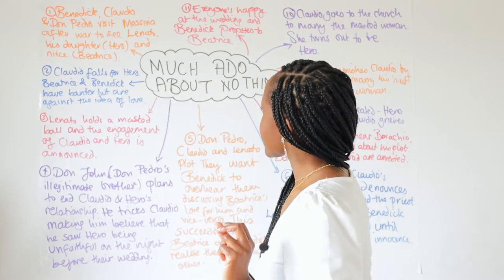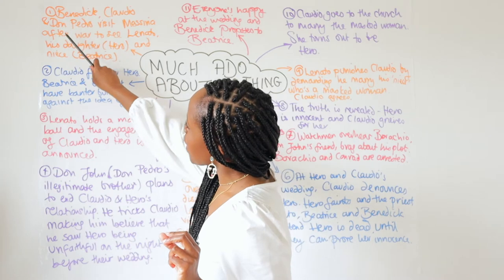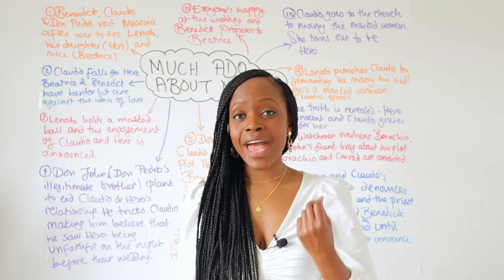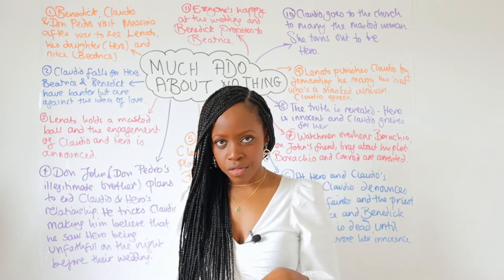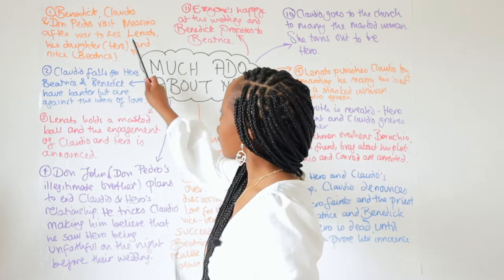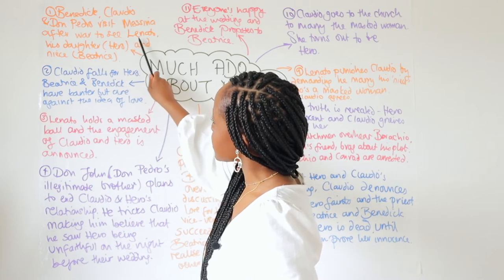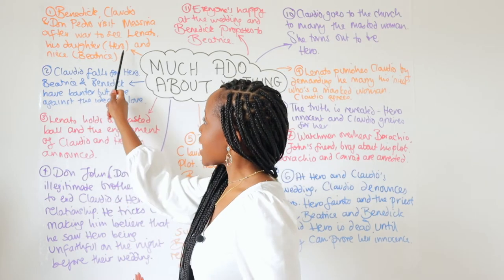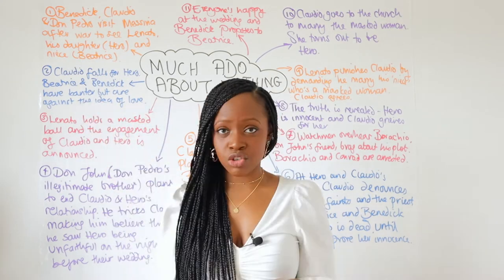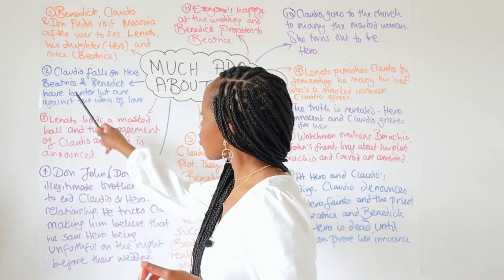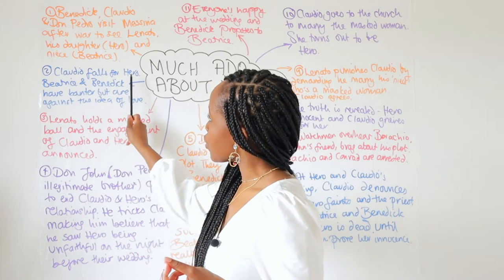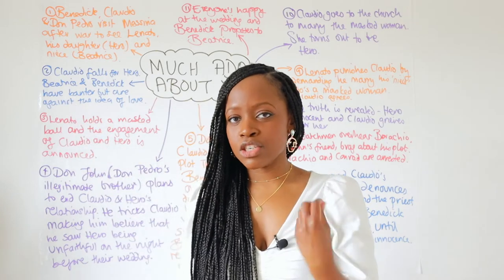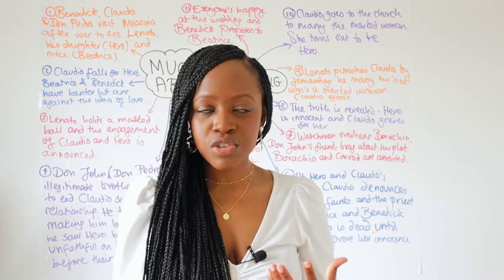The play begins with us learning that Benedict, Claudio and Don Pedro are visiting Messina after the end of a successful war which has ended in their favour. They go specifically to see Lenato, a nobleman, and when they visit him they also meet his daughter Hero and his niece Beatrice. Claudio then falls for Hero, who is Lenato's daughter.